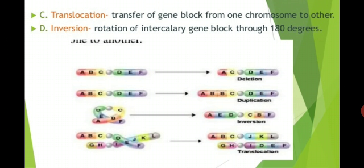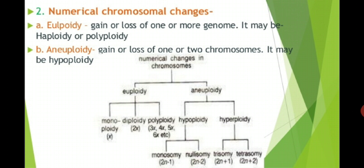The third type is translocation, which is the transfer of a gene block from one chromosome to another. The fourth is inversion, which is the rotation of an intercalary gene block through 180 degrees. All these types of chromosomal aberrations as sources of genetic variability can be seen in the figure.